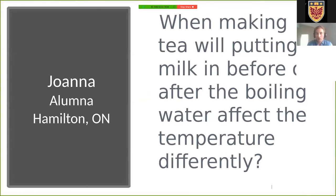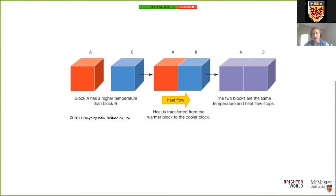Okay, Joanna asks, when making tea, will putting milk in before or after the boiling of water affect the temperature differently? So the answer is actually no. And in order to understand why, we have to think about how heat moves around. Okay, so in this cartoon, block A has a higher temperature than block B. I put them both together. And after I wait for long enough, the two blocks will come into what we call equilibrium. Equilibrium is just a way of saying they have the same temperature.